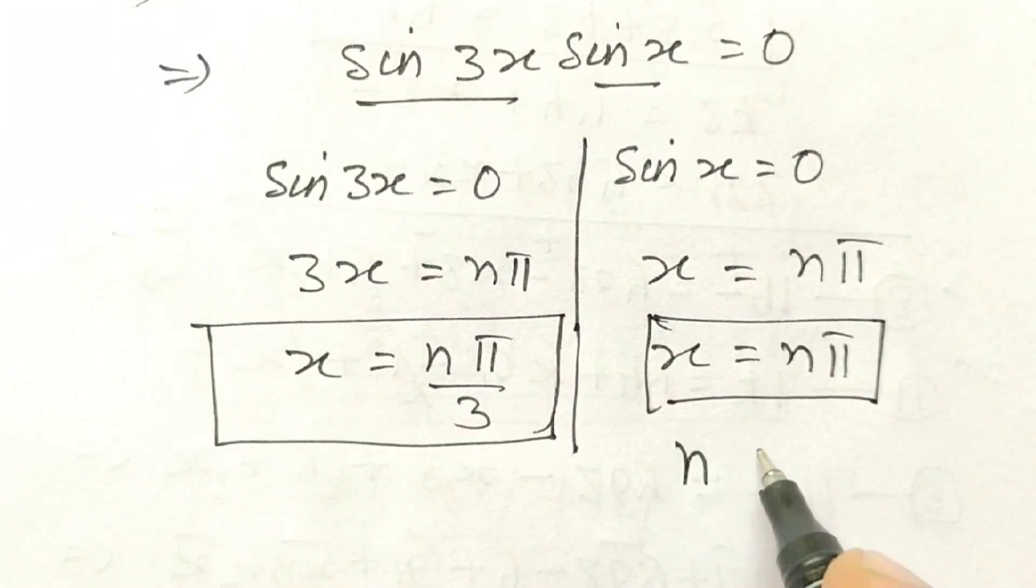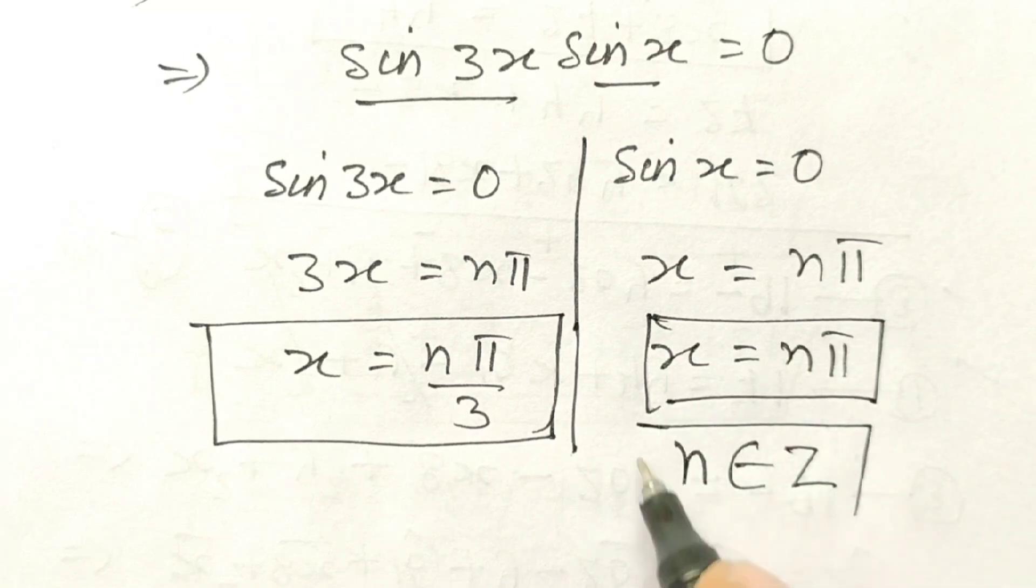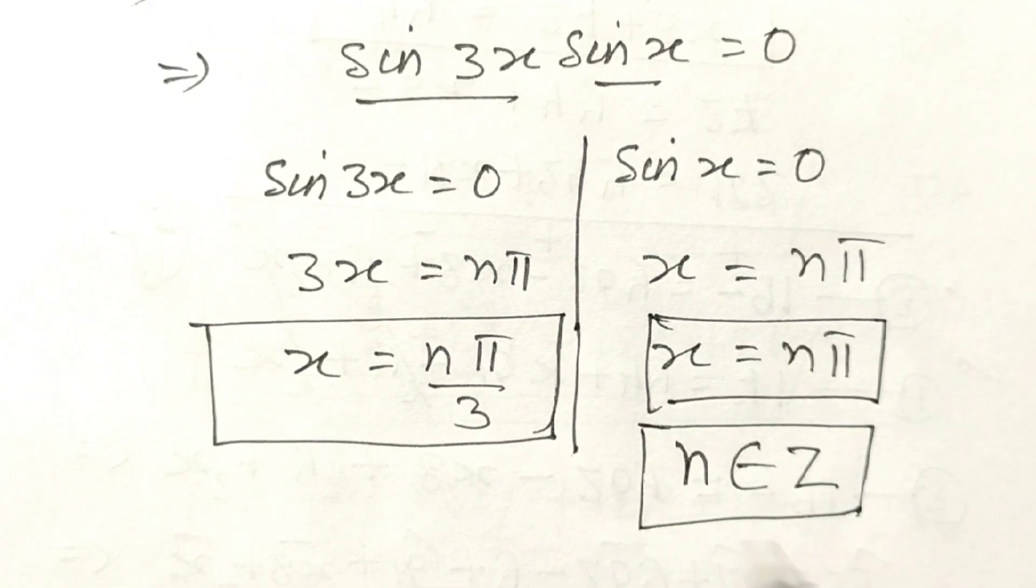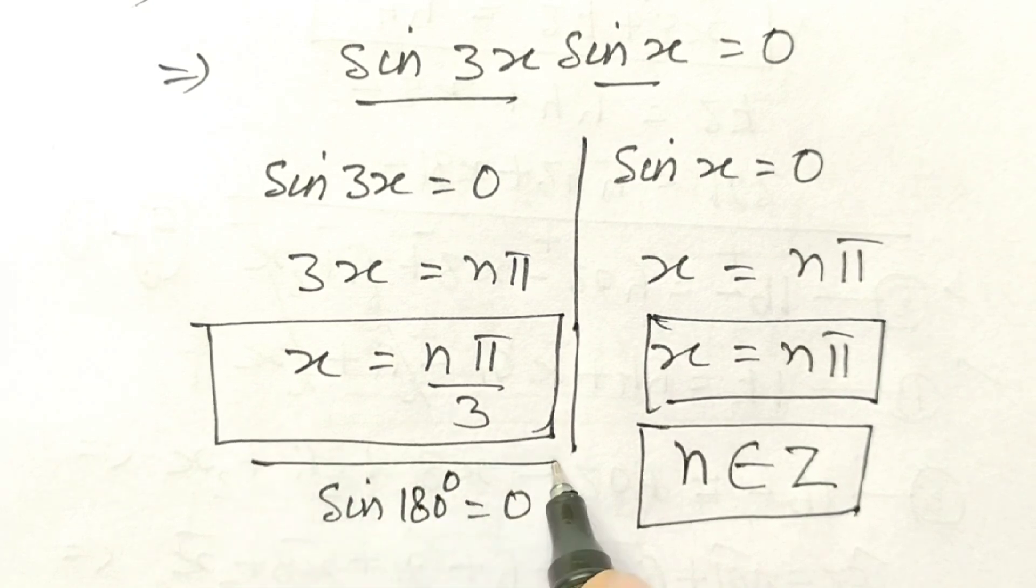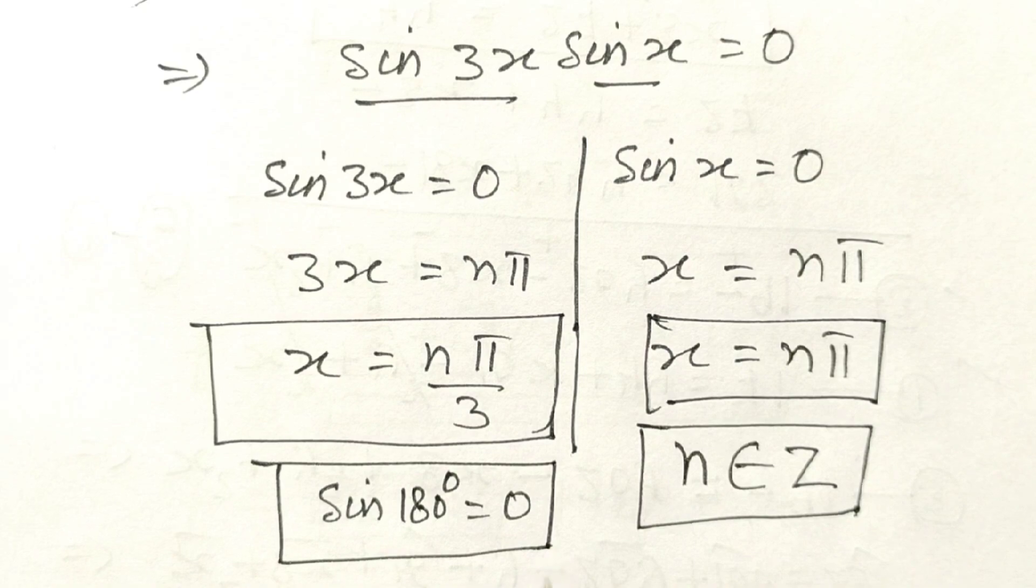Here, n is an integer. And sin 180 degree is equal to 0.